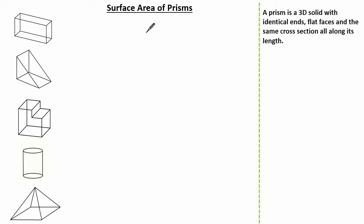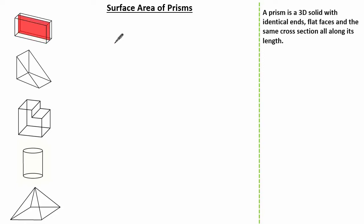Before we start, let's have a look at some key words, starting with a prism. A prism is a three-dimensional solid with identical ends, flat faces, and the same cross section all along its length. But what do I mean by cross section? Well, it's the area made by cutting straight across the solid. Looking at this cuboid, you can see we have the same cross-sectional area as we go along the length.